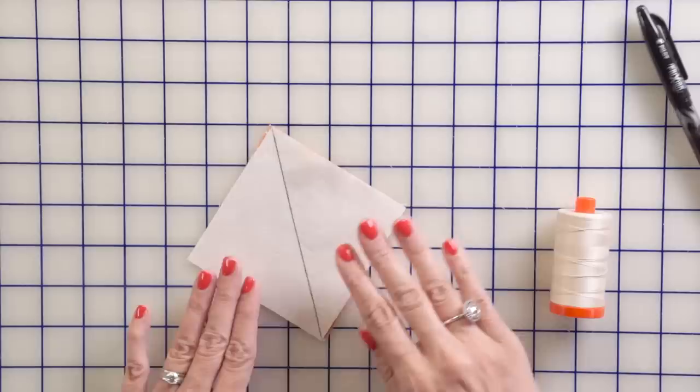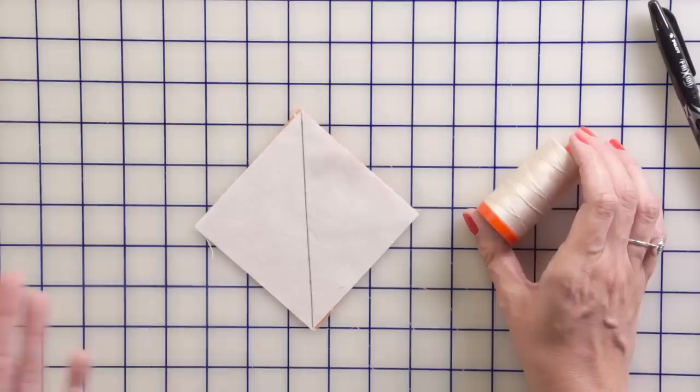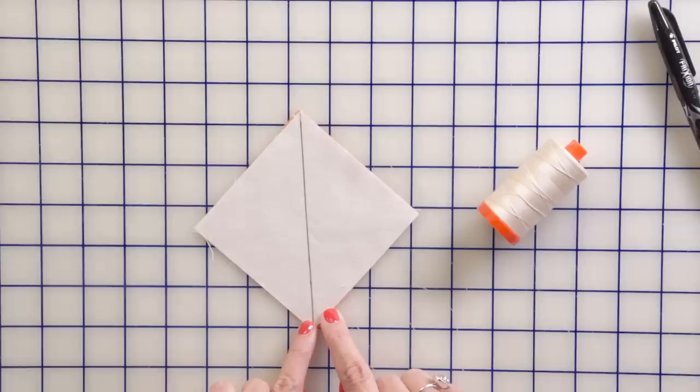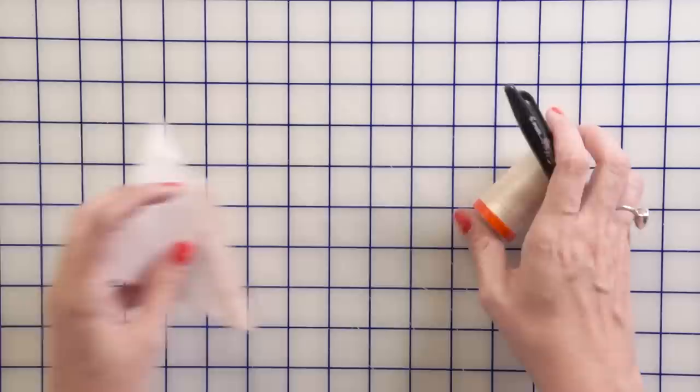Then from there, I'm using Aurifil Color 2000, and that's my favorite Aurifil Color to use. Of course, it matches Joanna's fabric perfectly. You're going to then stitch a quarter inch away from the drawn line on both sides. And then after that, cut on the drawn line. And that is going to look like this.